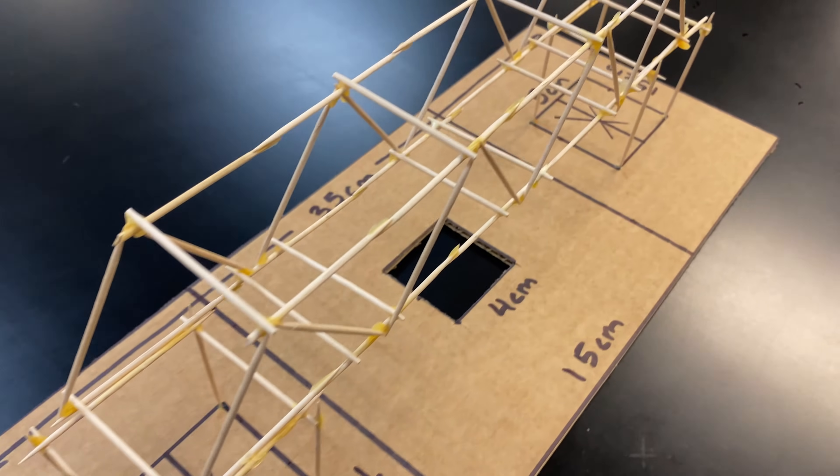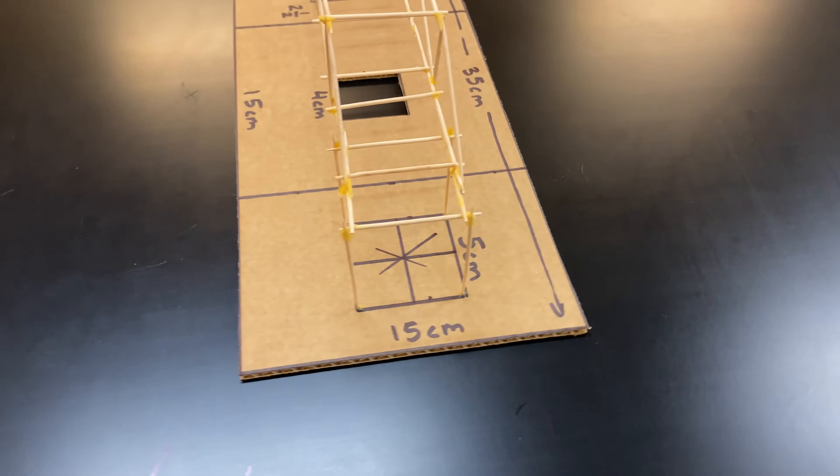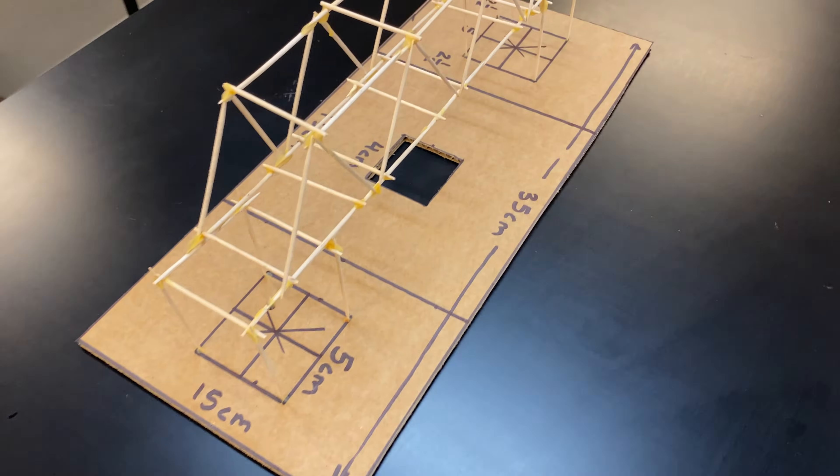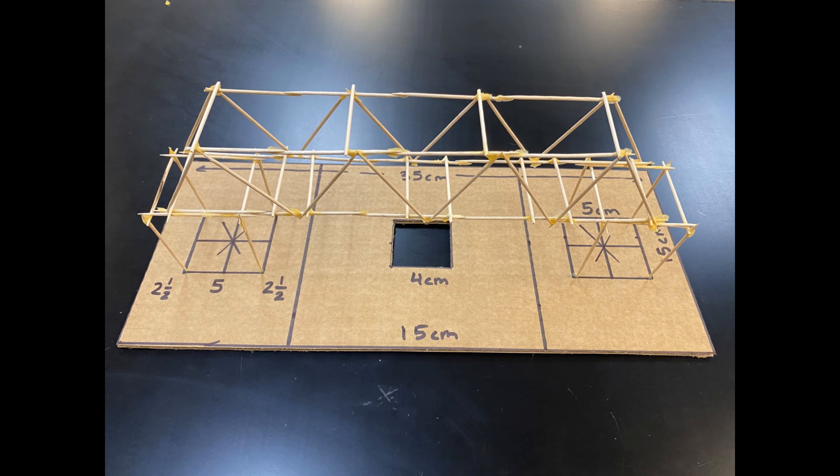The bridge you see here had to meet certain requirements for competition. For example, there was a limit to the number of toothpicks that could be used and the cardboard land on which the bridge was constructed had to have the dimensions you see written here.